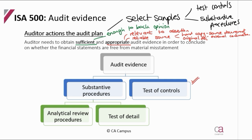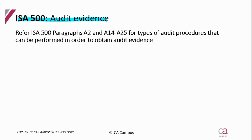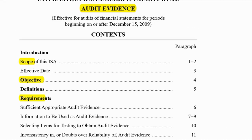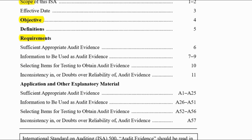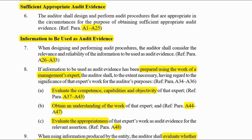We're focusing here today — before we get into the actual test of controls — on ISA 500, the audit evidence standard, where we will get some examples of the types of audit procedures in paragraphs A2 and A14 to A25. It's also going to discuss what I've just mentioned about the audit evidence being relevant, reliable, and sufficient. So let's open ISA 500. I'm going to go straight to the requirements with regards to sufficient and appropriate audit evidence.